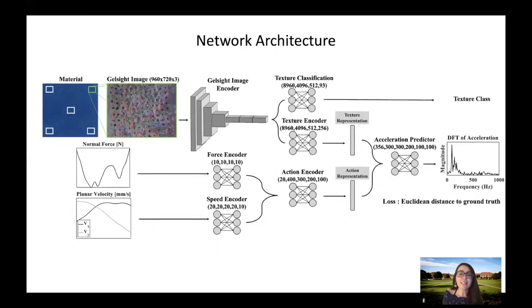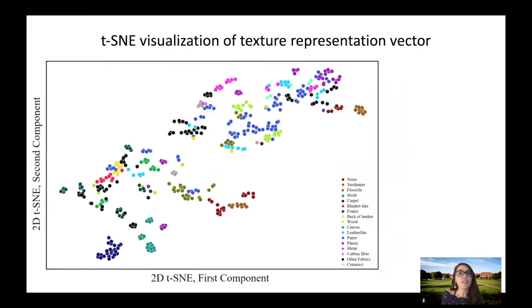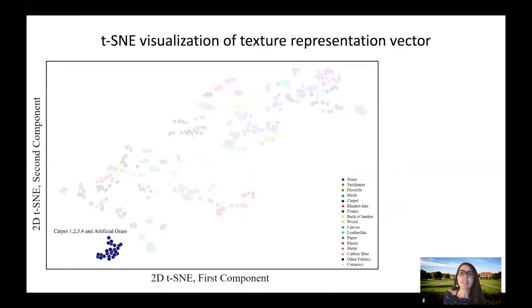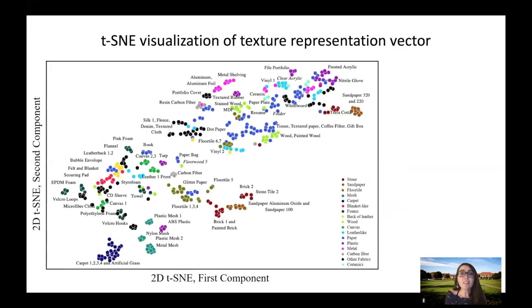Looking at the t-SNE visualization of the representation vector learned by the material encoder provides great insight on the possible source of improvement for our unified model. t-SNE visualizes high dimensional vectors in a lower dimensional space. The t-SNE plot shows that our texture encoder has learned to place materials that feel similar closer to each other. For example, our encoder has created approximate clusters for all the carpets, meshes, similar floor tiles, bricks and stones, similar sandpapers, similar metals, and other groups with similar textures.